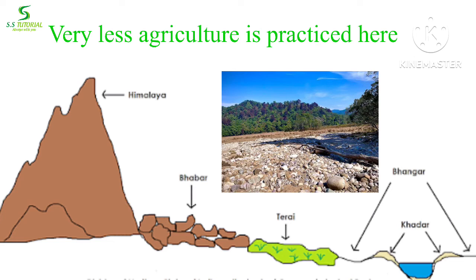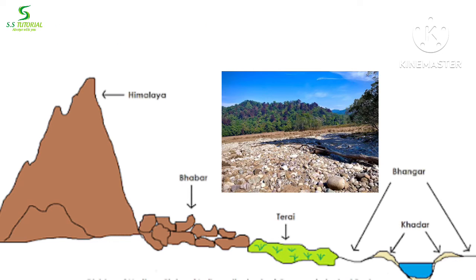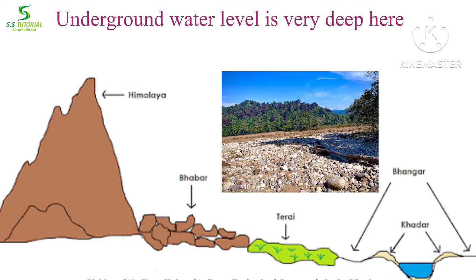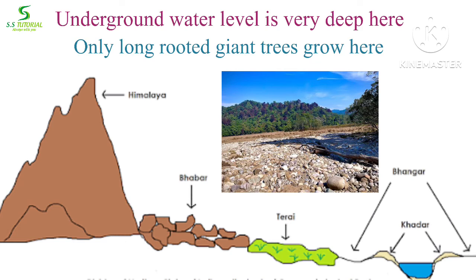As this region remains dry throughout the year except during monsoon and is full of pebbles, very little agriculture is practiced here. Underground water level is very deep in this region, which is why only long-rooted giant trees grow here.